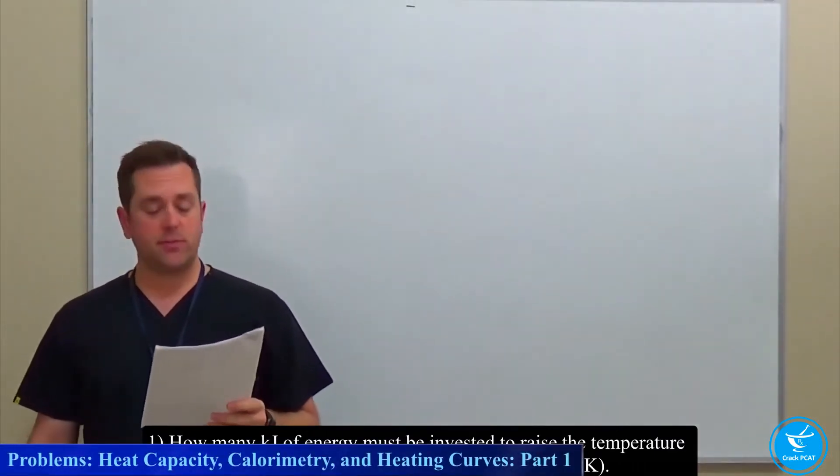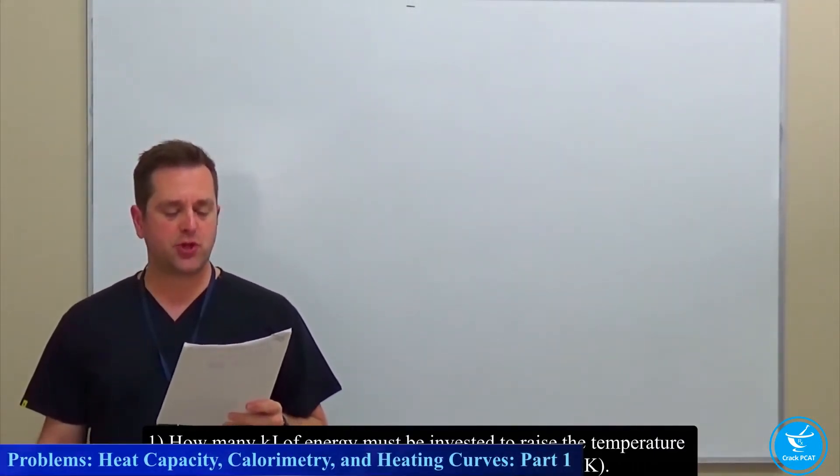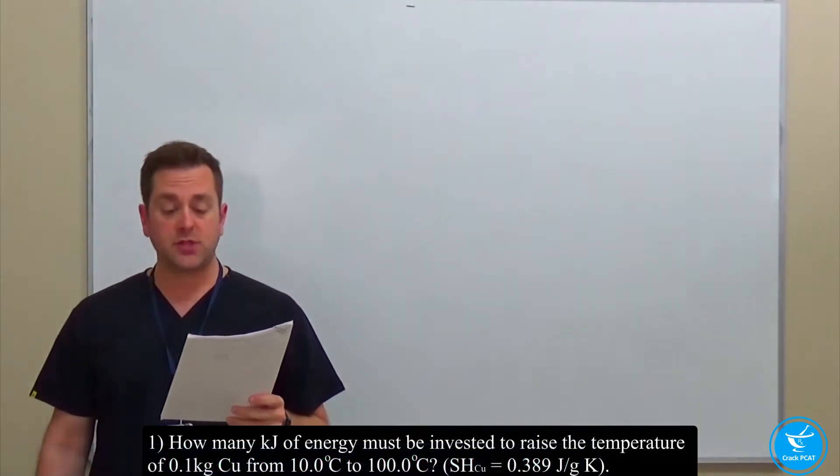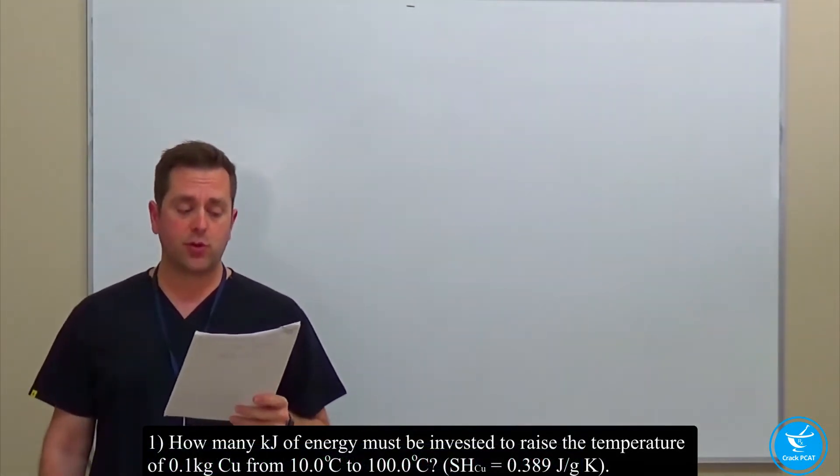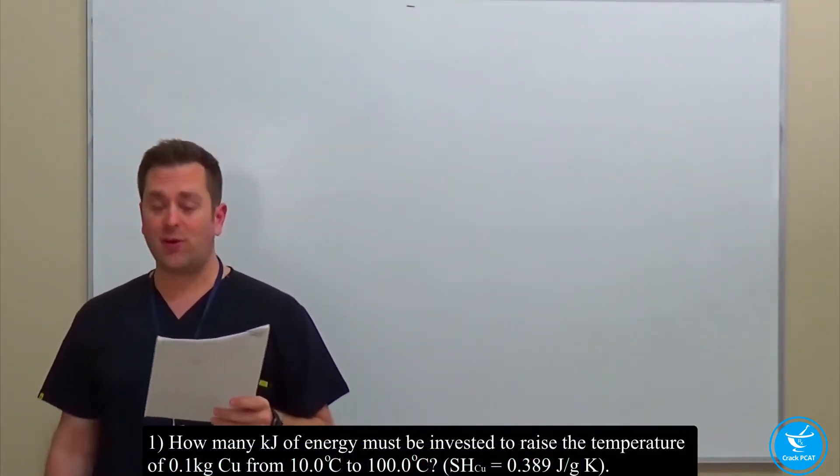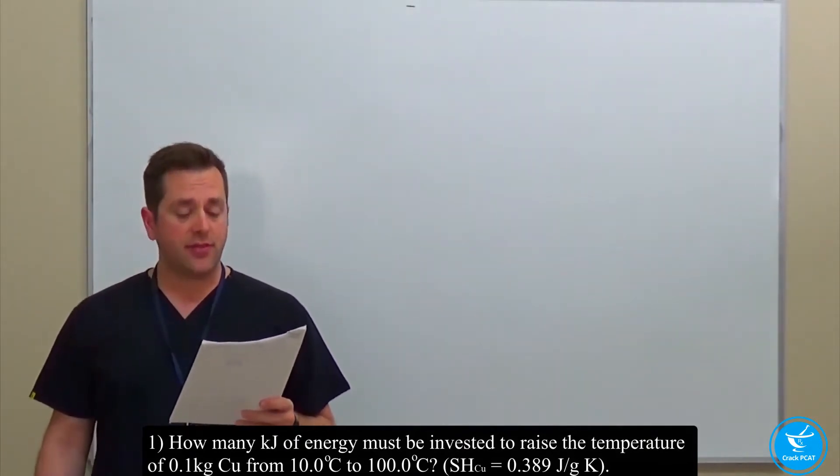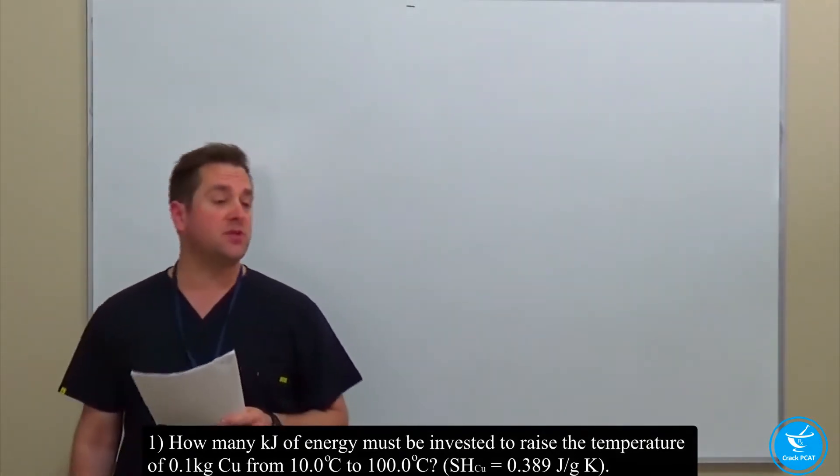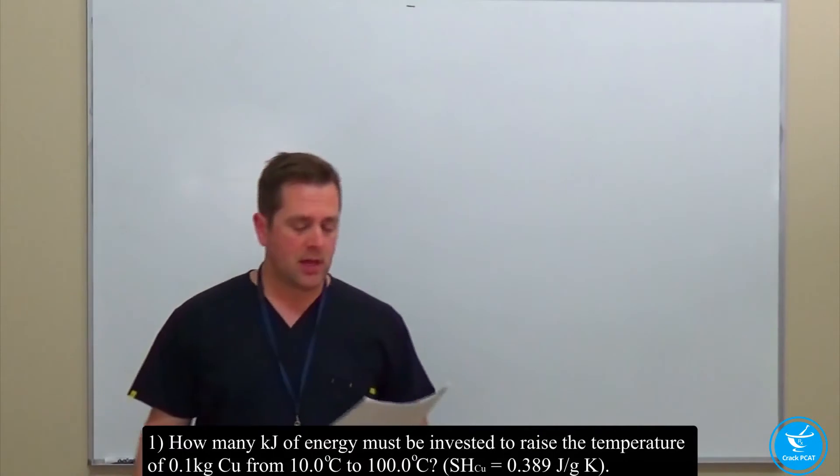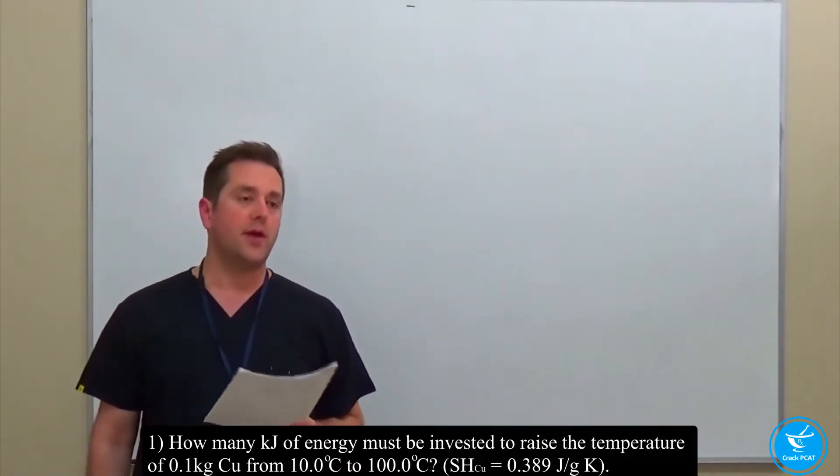How many kilojoules of energy must be invested to raise the temperature of 0.1 kilograms of copper from 10.0 degrees Celsius to 100.0 degrees Celsius? We're provided the specific heat of copper, which is 0.389 joules per gram kelvin.